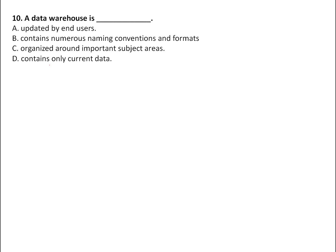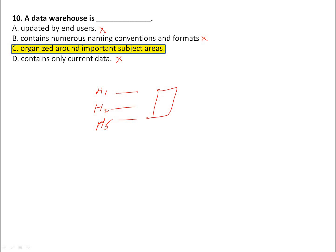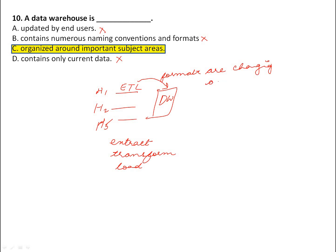What is a data warehouse? It does not contain only current data, it is not updated by end users, and it does not contain numerous naming convention formats — because before storing data into the data warehouse we perform the ETL process: Extract, Transform, and Load. Through ETL, conventions and formats are changed. A data warehouse is organized around subject areas, so the answer is C — it is subject-oriented.